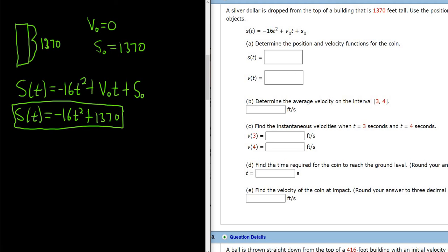The velocity is the derivative of position. So to find the velocity, v(t), all we do is take the derivative. So it will be 2 times negative 16, so negative 32t. And the derivative of 1370 is 0, because it's a constant. So this would be the velocity. So this one here is the position, and this one here is the velocity.